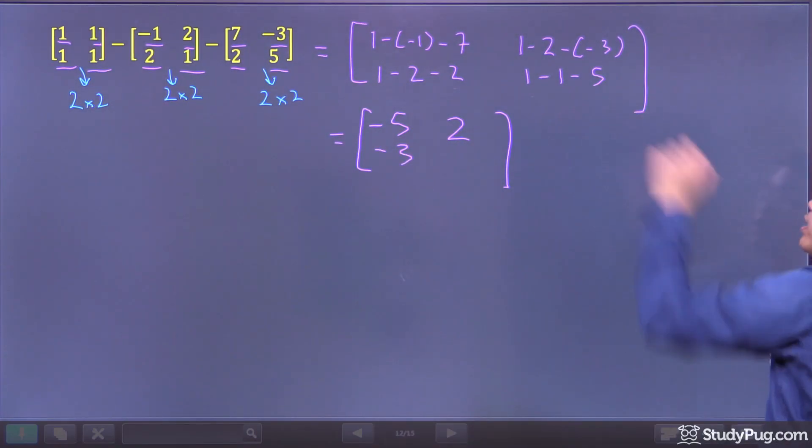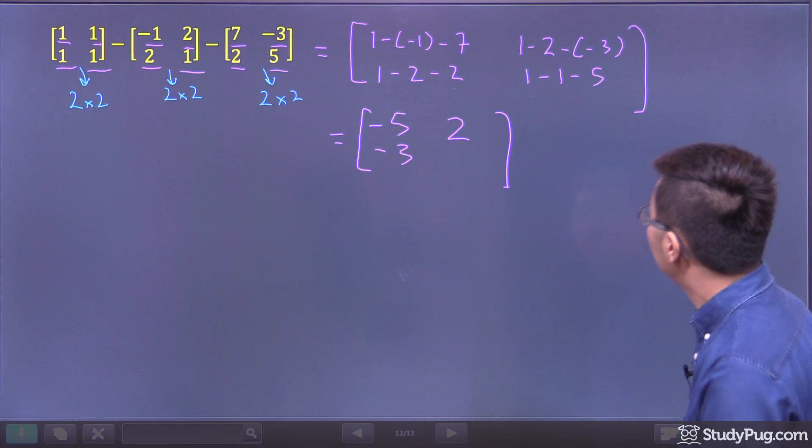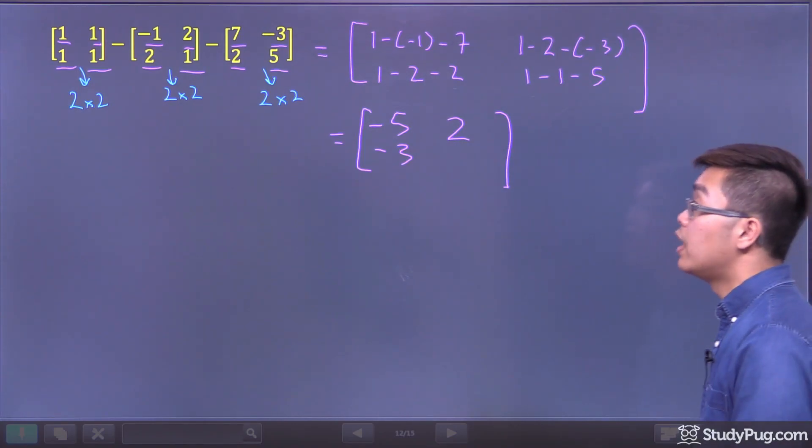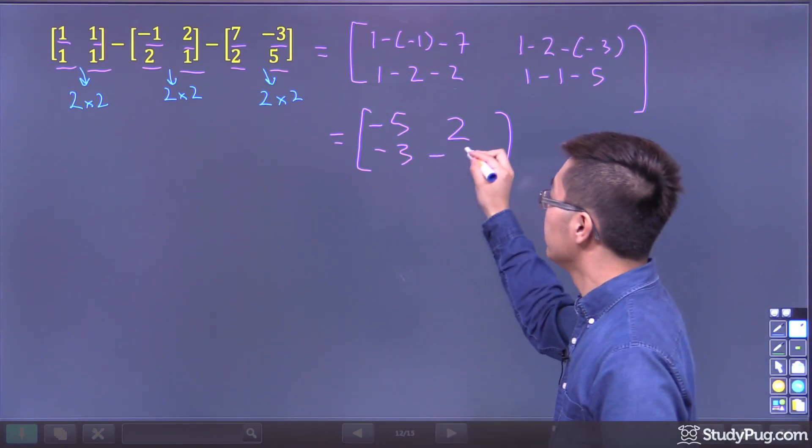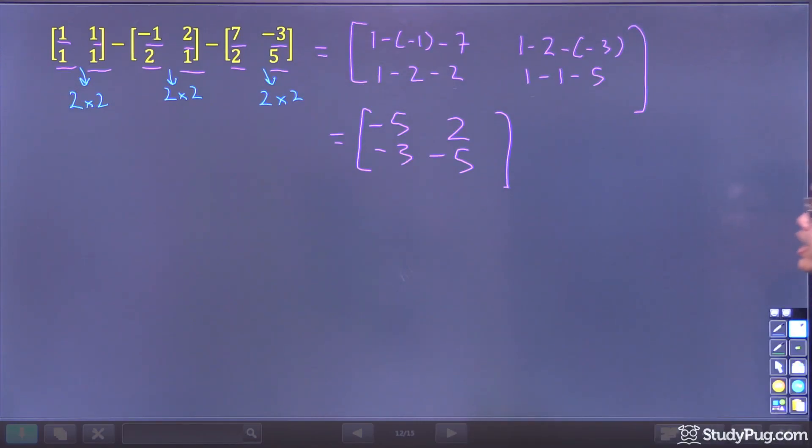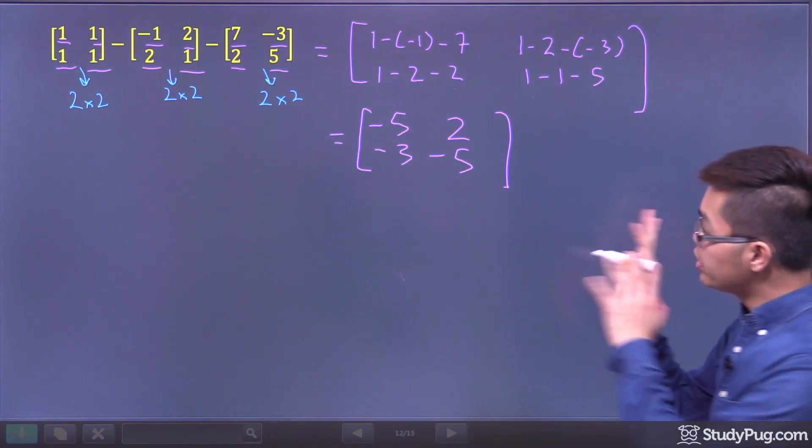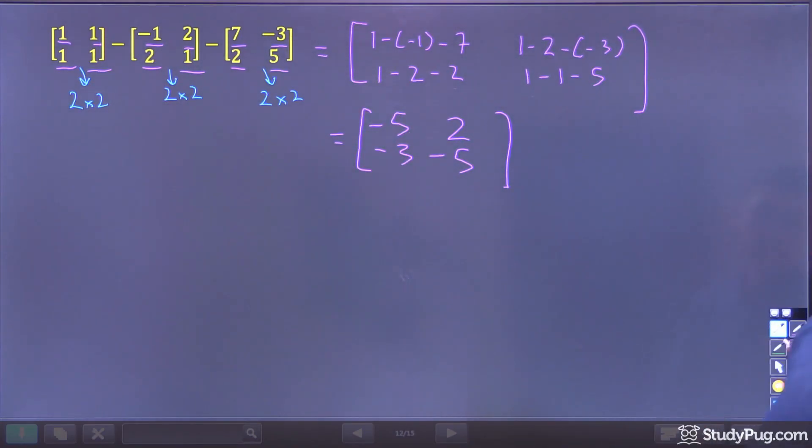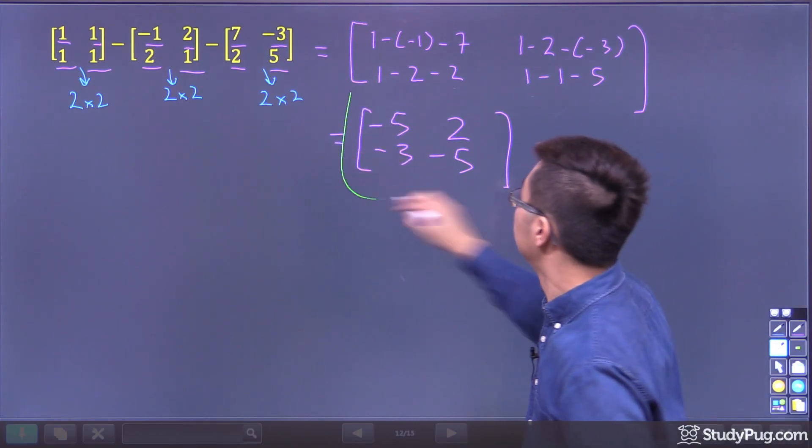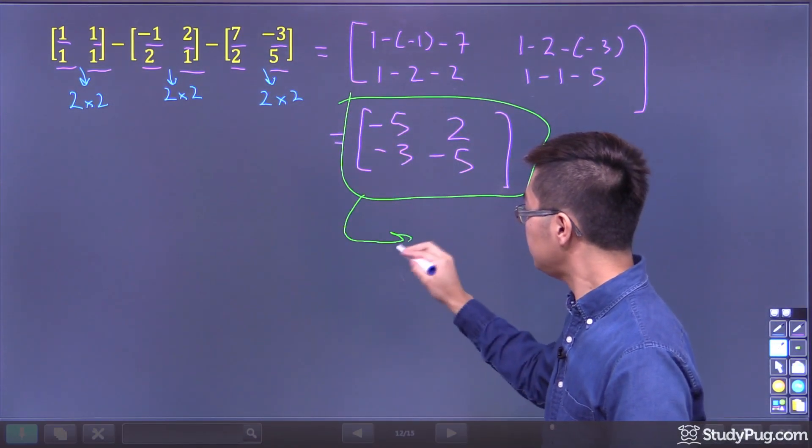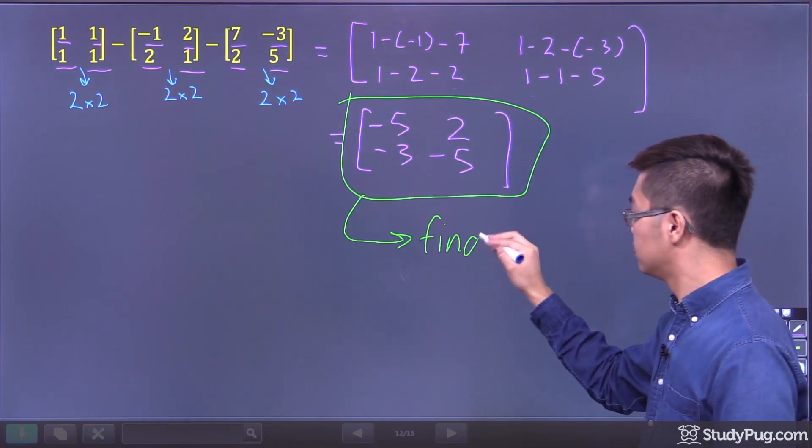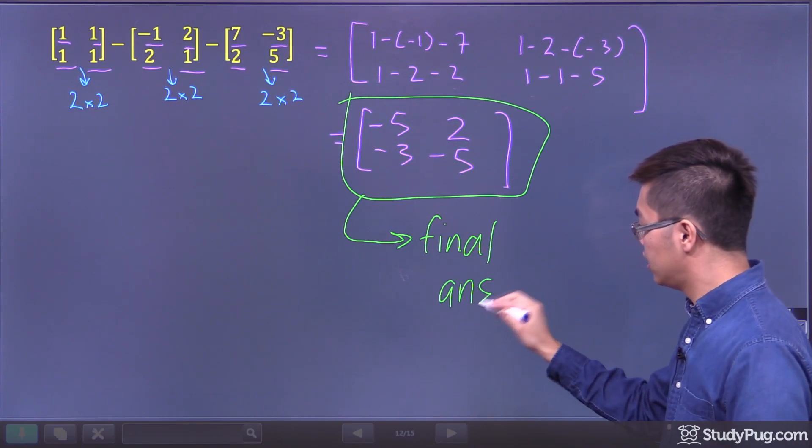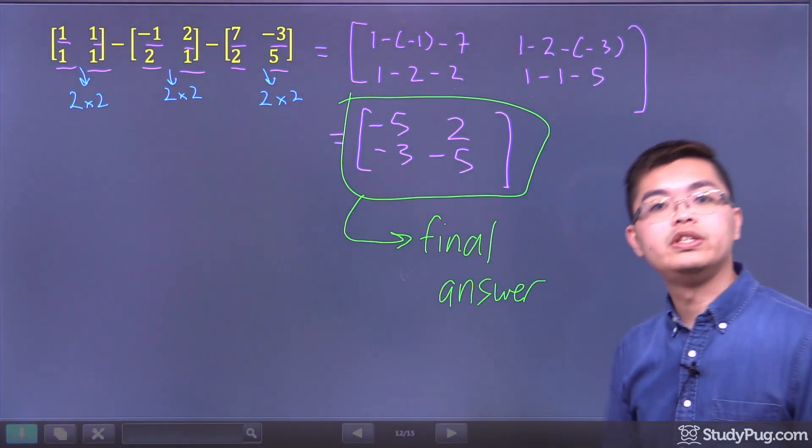And lastly, we have 1 minus 1 minus 5. So 1 minus 1 is 0, minus 5 is negative 5. So here we got negative 5. And that's pretty much it. We're done. That's the matrix we get when we subtract these three matrices together. This is our final answer, and now we can move to the next question.